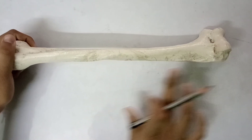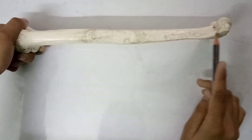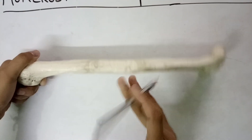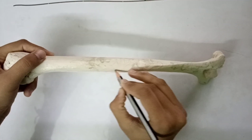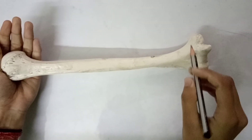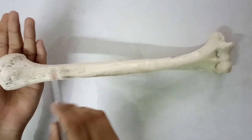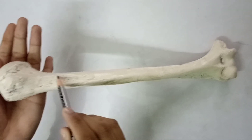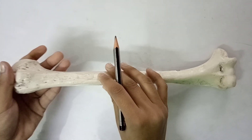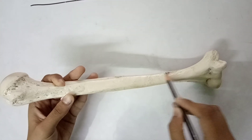The lateral border is more prominent at its lower end where it forms the lateral supracondylar ridge. In its middle part it is interrupted by the radial or spiral groove. The medial border: its upper part forms the medial lip of the intertubercular sulcus, and below it is continuous with the medial supracondylar ridge.